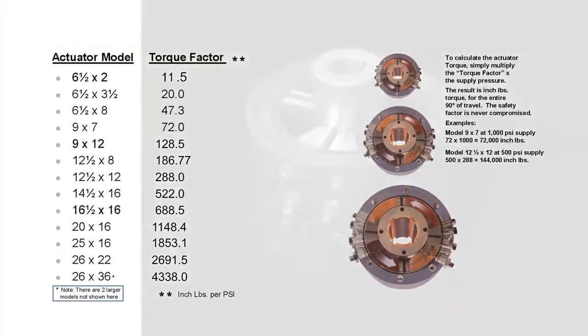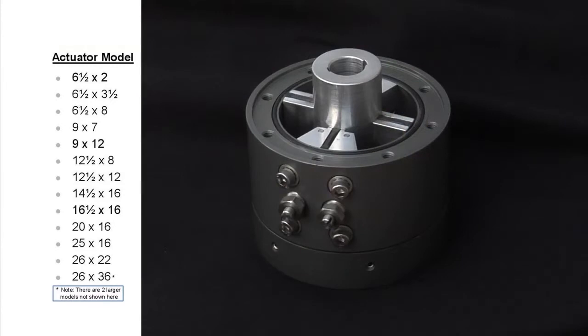By the way the actuator models are based on the internal dimensions of the actuator. The first number being the internal diameter, the second number being the internal height of the cylinder in inches.